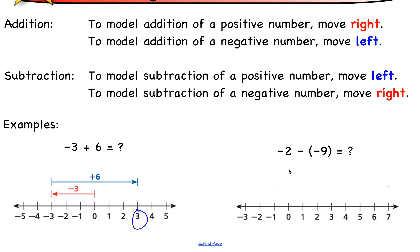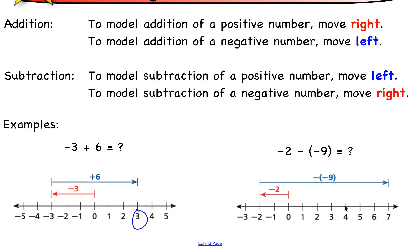Try the other problem on your own. We start at zero, go left two units. Then we have subtracting a negative, which means we move right. So we move right nine units and end up at positive seven. That is our answer.